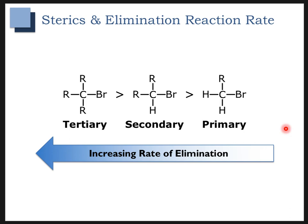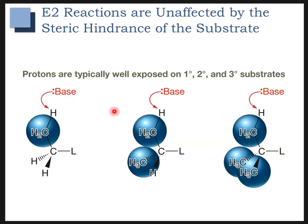Getting into sterics, the steric effect for elimination reactions is quite different from substitution reactions. Tertiary substrates have an increasing rate of elimination, whereas primary substrates have the lowest rate. E2 reactions, unlike SN2 reactions, are unaffected by steric hindrance of the substrate because the base is attacking the hydrogen, not the carbon bearing the leaving group. Even if you add methyl groups to bulk up that carbon, it really doesn't affect how the base approaches the hydrogen.